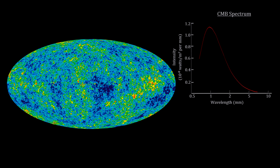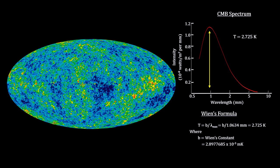The key observation is that the light fits the blackbody radiation curve perfectly. Its mean wavelength is around 2 mm, and its peak intensity has a wavelength of 1 mm. That's in the microwave range. This gives us the temperature of the radiation today: it is 2.725 degrees.